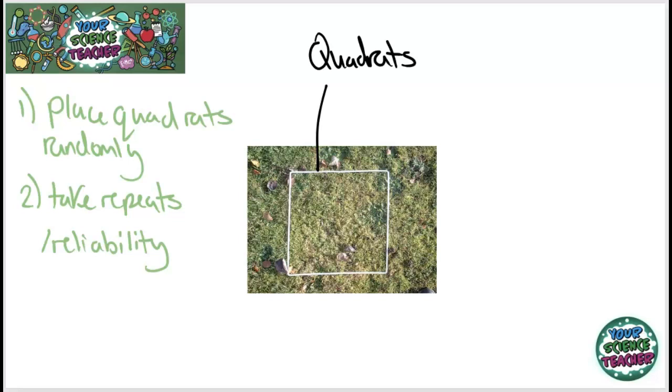Now you can use quadrats placing them randomly in a field, or there is another way to place your quadrats, and that is using what you call a transect line.